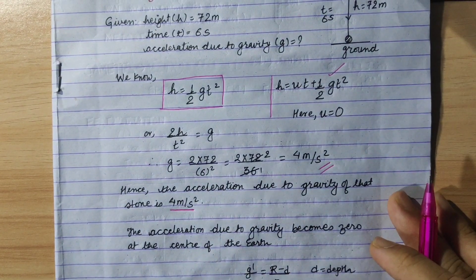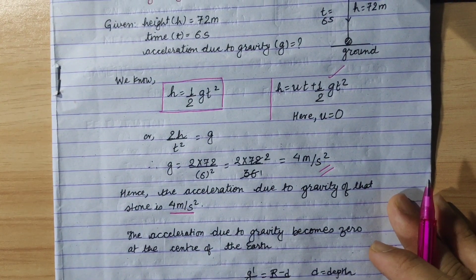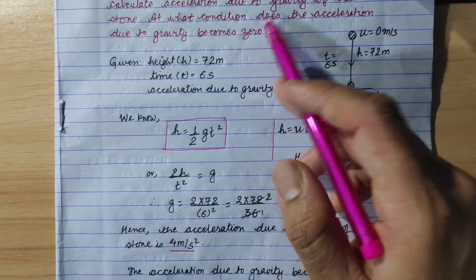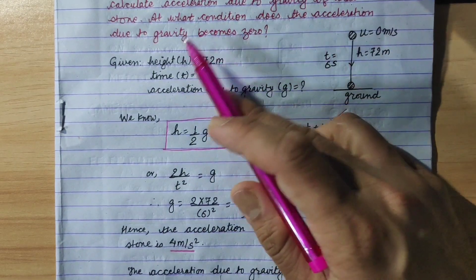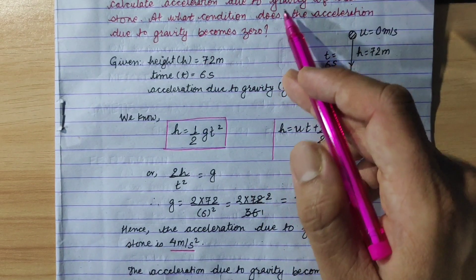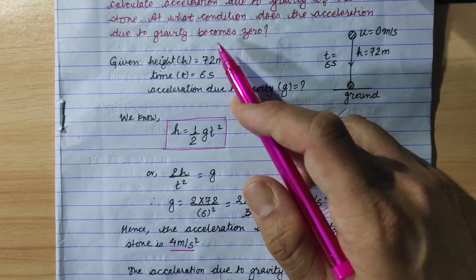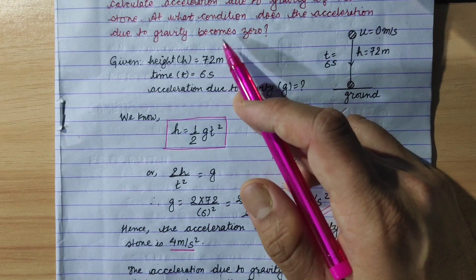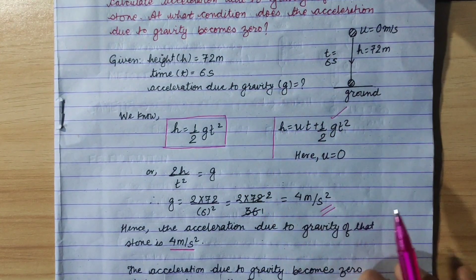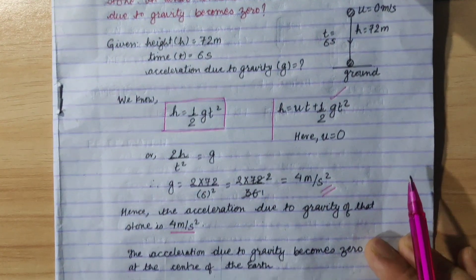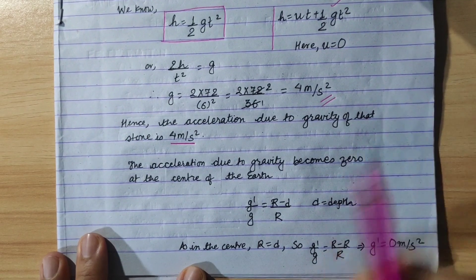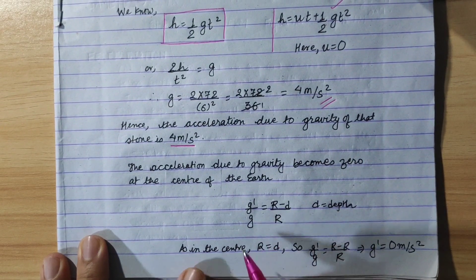Now let's go to the second part. At what condition does the acceleration due to gravity become 0? Now let's see. In this case, we can use this formula.